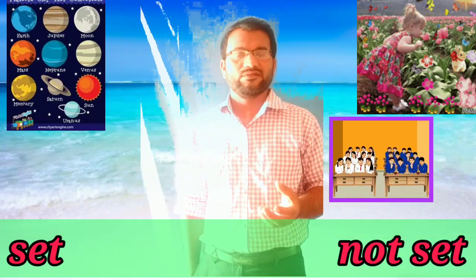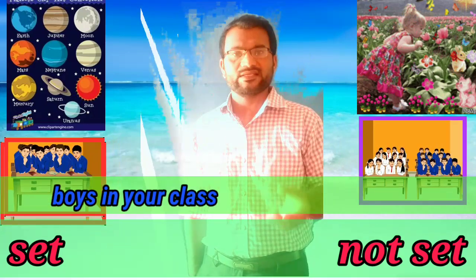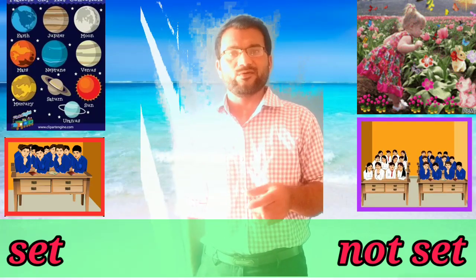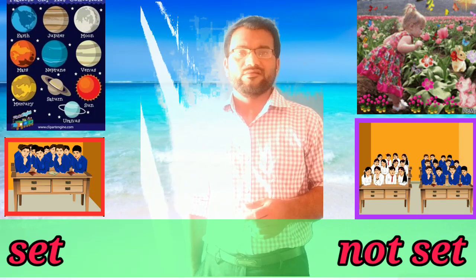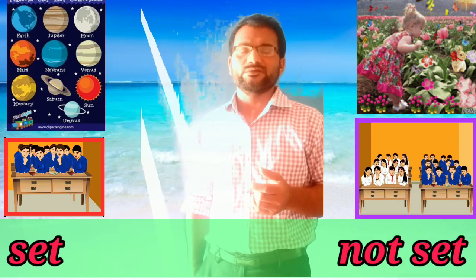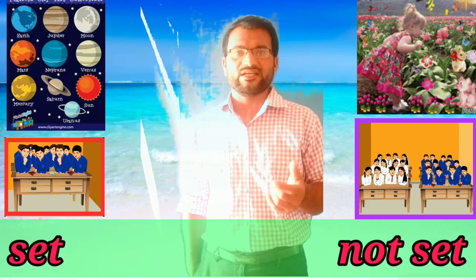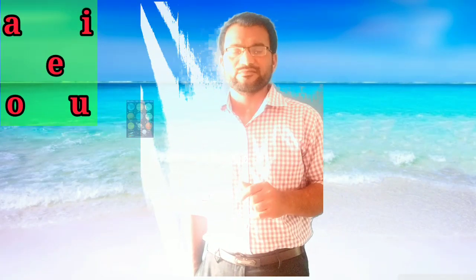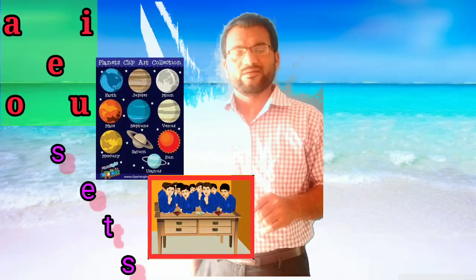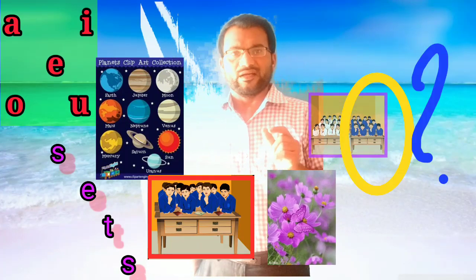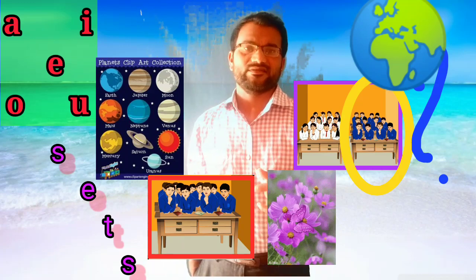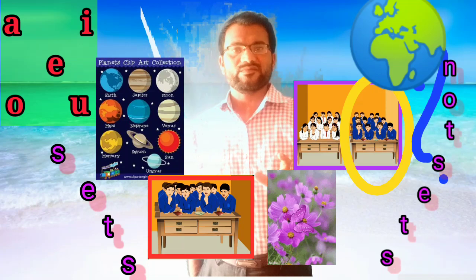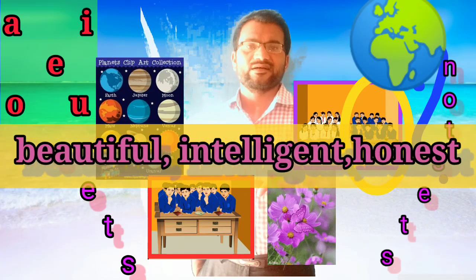When we prepare the collection of boys in our class, then it is a set — we can note down all the names. Looking back at all the examples: vowels in the English alphabet, and planets in the solar system, and boys in the classroom are sets. Most beautiful flowers, intelligent boys in the classroom, and honest people in the world are not sets, because the terms used in these collections are not well-defined.